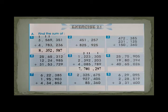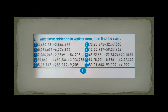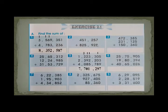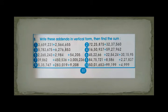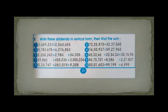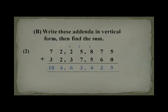Now moving to Part B: write these addenda in vertical form, then find the sum. Vertical form means you first place these numbers one below the other. I have solved two questions for your understanding. If you want to take a screenshot of this, do so now.